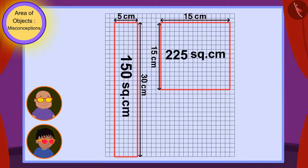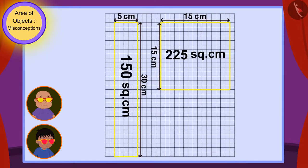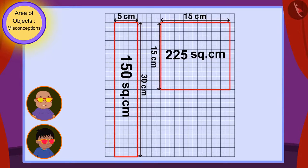Raju and Babalu also found the area of the surfaces of both tables just like you. Look Raju, the area of the rectangular table is 150 square centimeters, and the area of the square-shaped table is 225 square centimeters. So, even though the measurement of the longest edge of the rectangular table is bigger than the square-shaped table, the square-shaped table is bigger than the rectangle-shaped table.